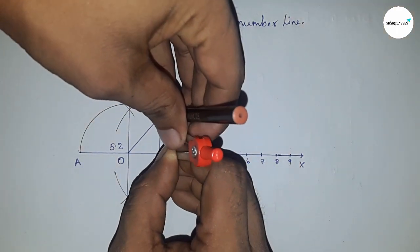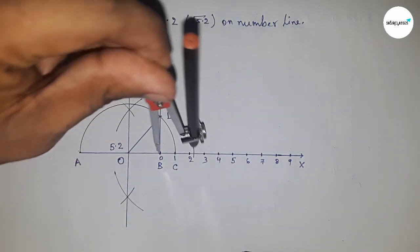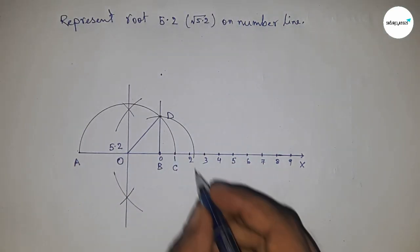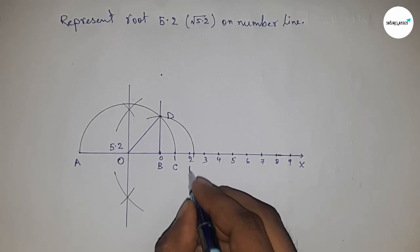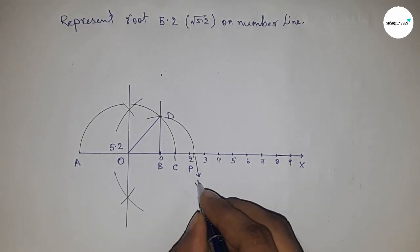Take the length BD with a compass and draw an arc which meets the number line at point P. This is the representation of √5.2 on the number line.